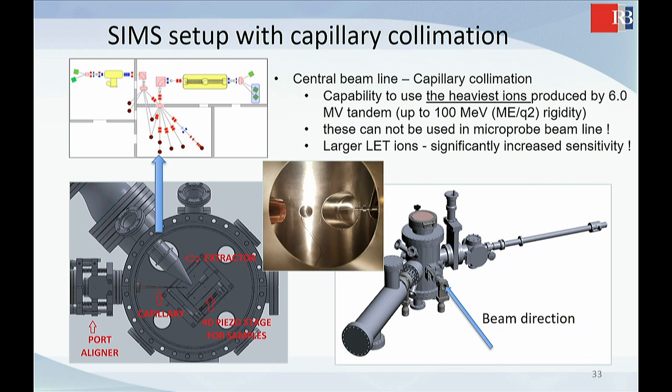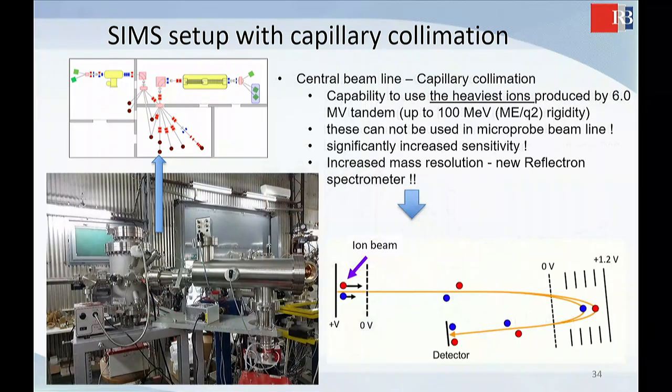And this is this large LED ions can be used for that. And in addition, on this system, we put this reflectron geometry spectrometer. Now I'll try to explain why we need the reflection. So this is the chamber. The beam comes from that side. And then you have this spectrometer. So ion beam is the sample.